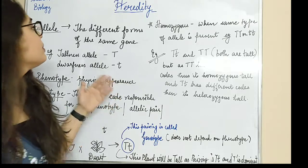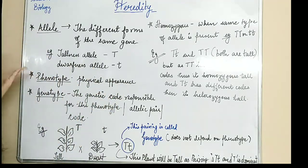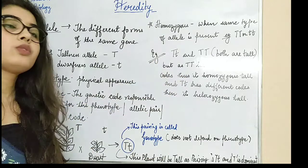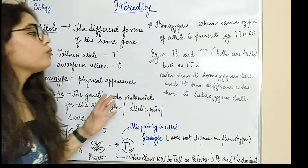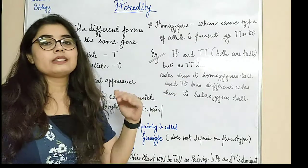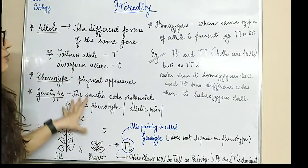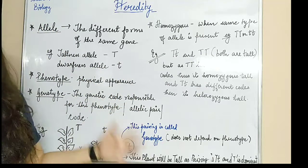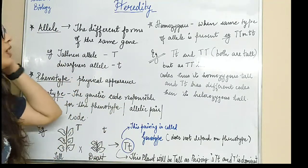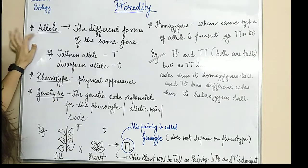Now in this video, we will be moving forward with alleles, phenotype, genotype, and some examples so that you can get a clear idea of what is homozygous, heterozygous, and allele. All these things we'll be studying in this video. So let's get started — first, we'll read about alleles.